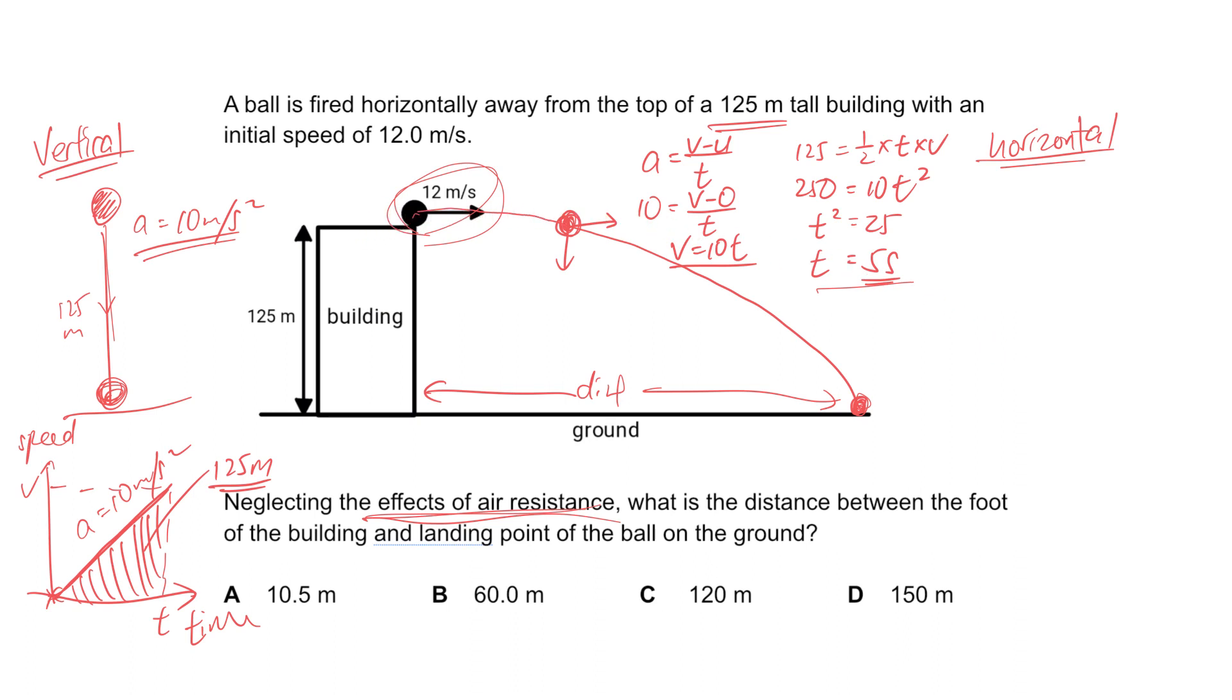If you understand that, it should be simple. Horizontally, it's like a car going to the right. To find the distance traveled by the ball horizontally, use distance = speed × time. The speed is constant at 12 and the time is 5 seconds.